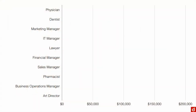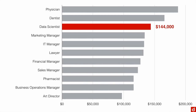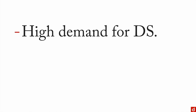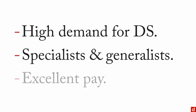Data science pays. Looking at the top 10 highest-paying salaries from US News — physicians, dentists, lawyers — and adding data scientists using O'Reilly data, data scientists come in third with an average total compensation of about $144,000 a year. In sum: very high demand, a critical need for both specialists and generalists who speak the language, excellent pay, and a compelling career alternative.